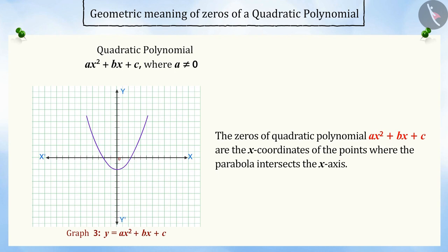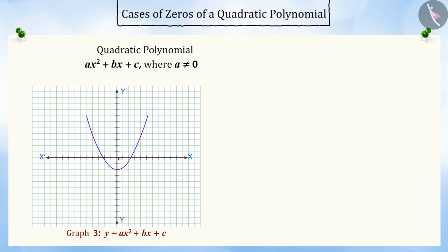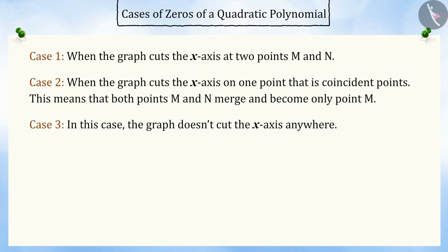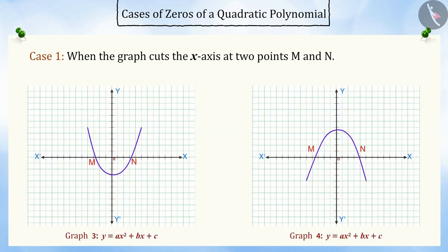This result is true for all quadratic equations. Now, if we observe the graph of ax squared plus bx plus c, there are three cases. Case 1: when the graph cuts the x-axis at two points m and n. In this case, the x-coordinates of points m and n are the two zeros of the quadratic polynomial ax squared plus bx plus c.